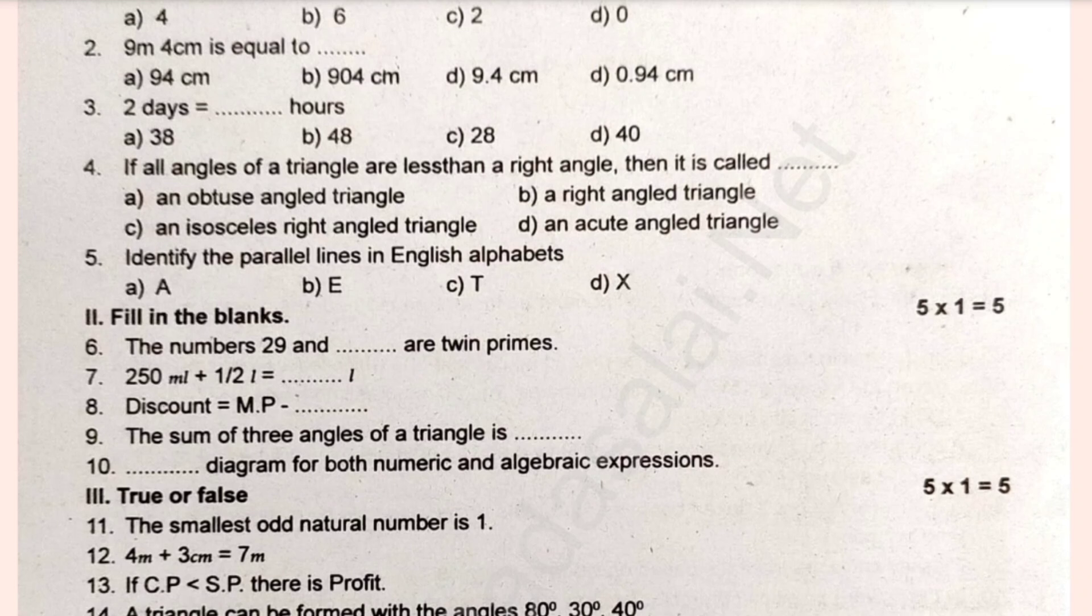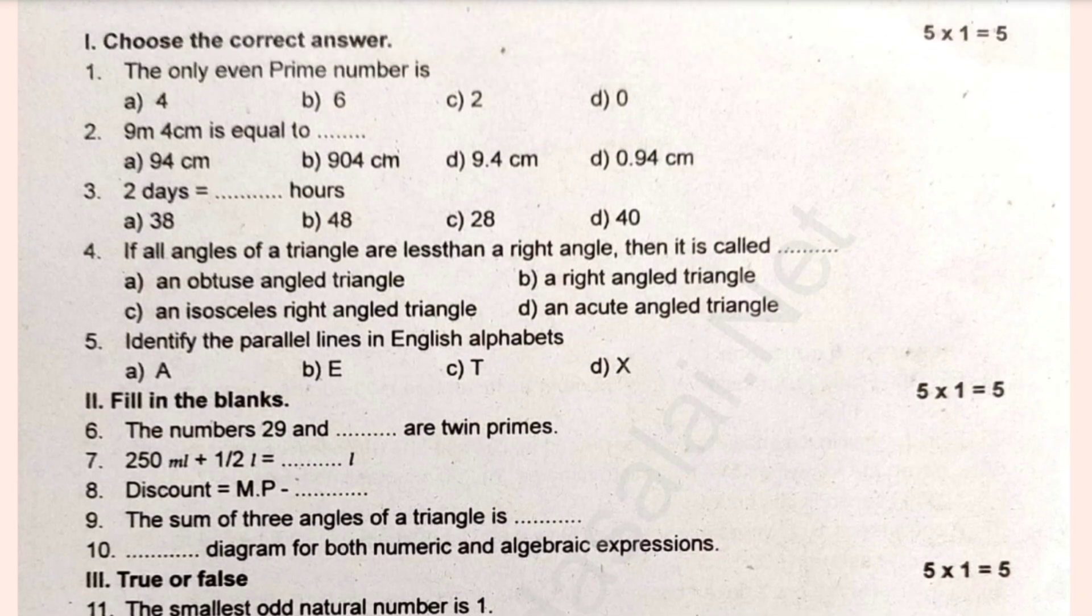Next round, fill in the blanks, 5x1=5. Discount is equal to MP minus dash. Dash diagram for both numeric and algebraic expressions.